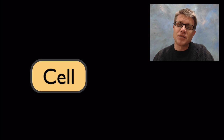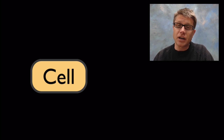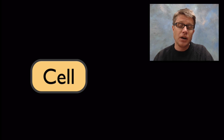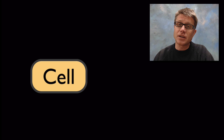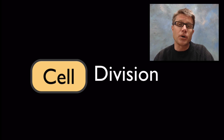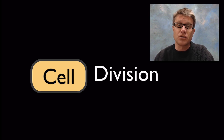Hi, it's Mr. Andersen and in this video I'm going to talk about cells. Life is made of cells — it's the basic unit of structure and function. All cells we have must come from preexisting cells, and so how does that work? It's through a process called cell division.